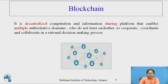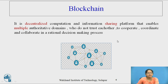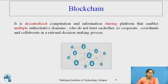Moving back to the definition of blockchain: it is a decentralized computation and information sharing platform, enabling multiple authoritative domains who do not trust each other to cooperate, coordinate, and collaborate in rational decision-making. In blockchain, it is like a secure chain where each block stores its data and may transfer data in an encrypted mode. When sharing or transferring, a timestamp is added to that particular record, which is stored in a database.